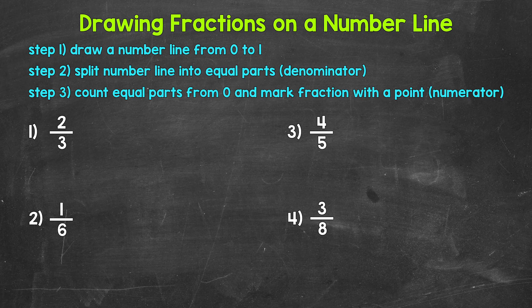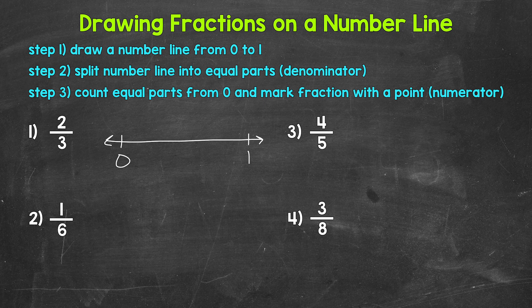Let's jump into number one, where we have two thirds. Step one, we need to draw a number line from zero to one. We have a distance from zero to one — this is one whole. Two thirds is part of a whole, so two thirds is going to be somewhere in between zero and one.